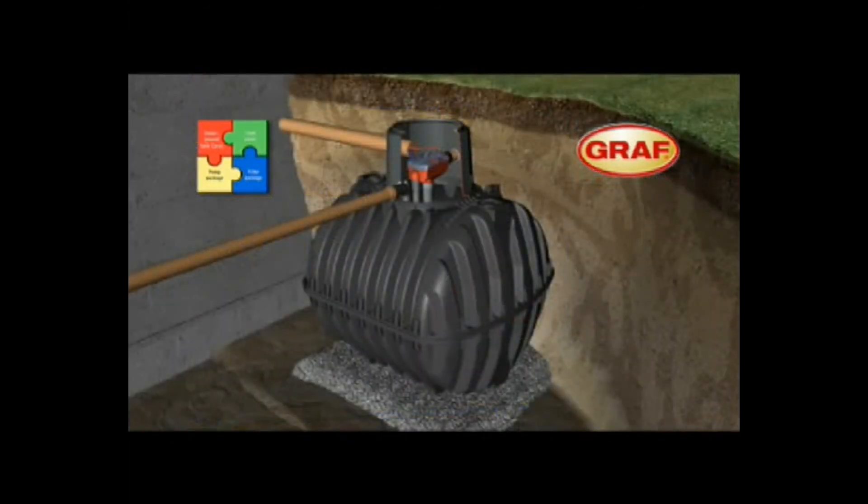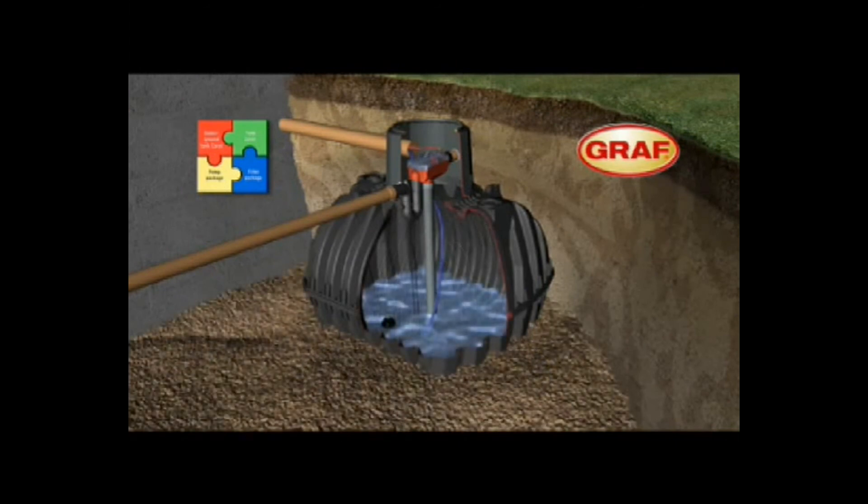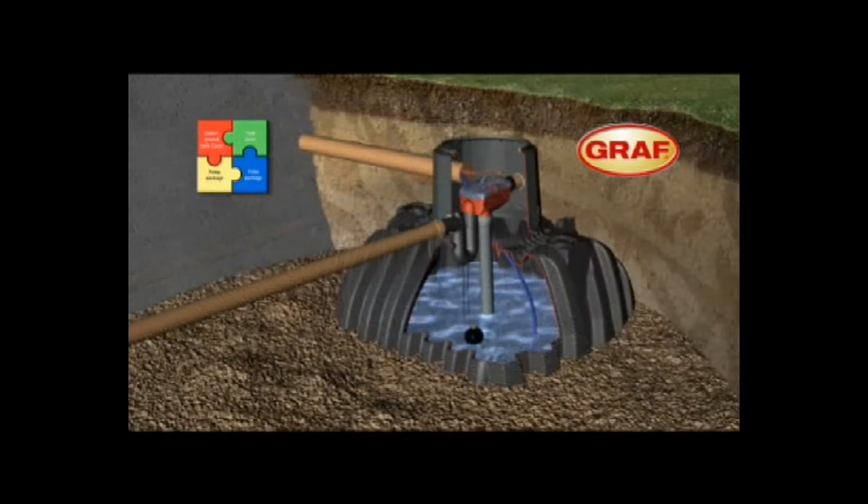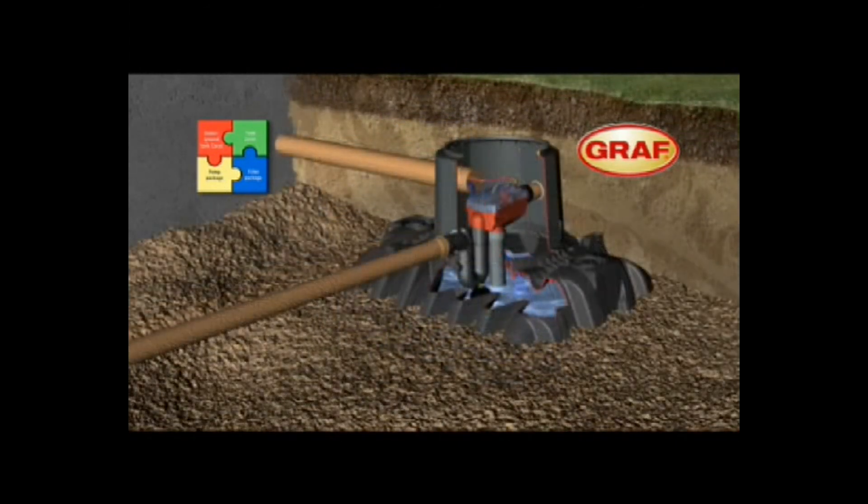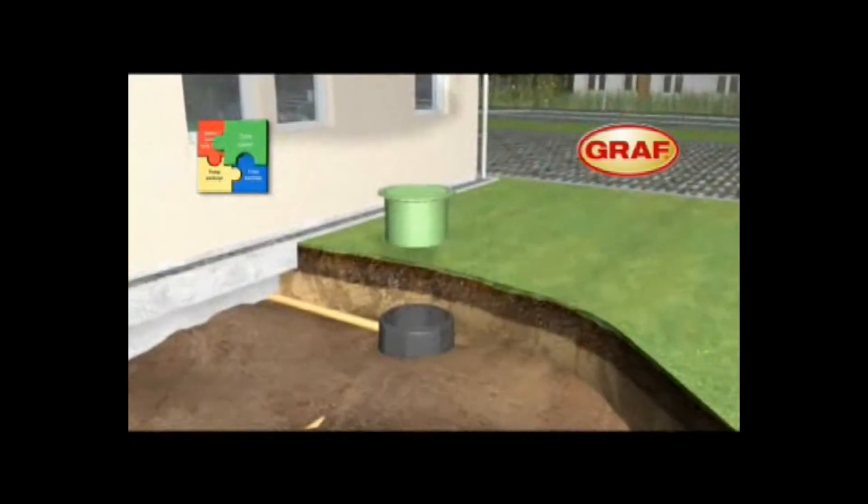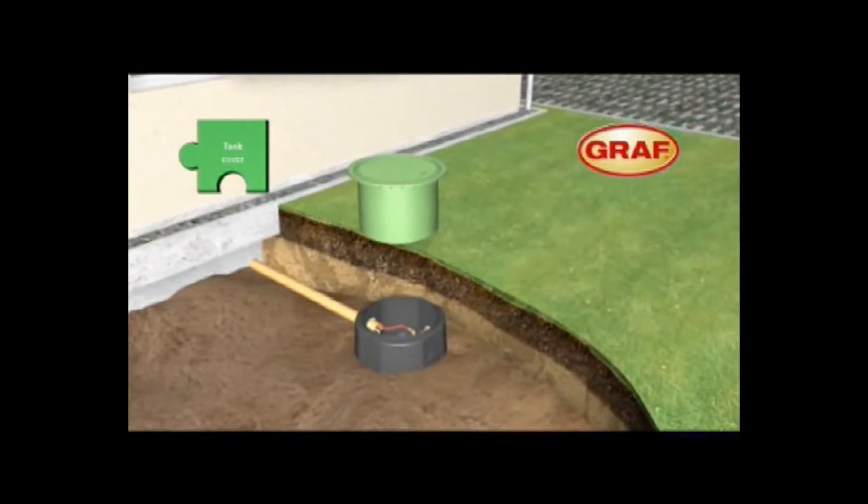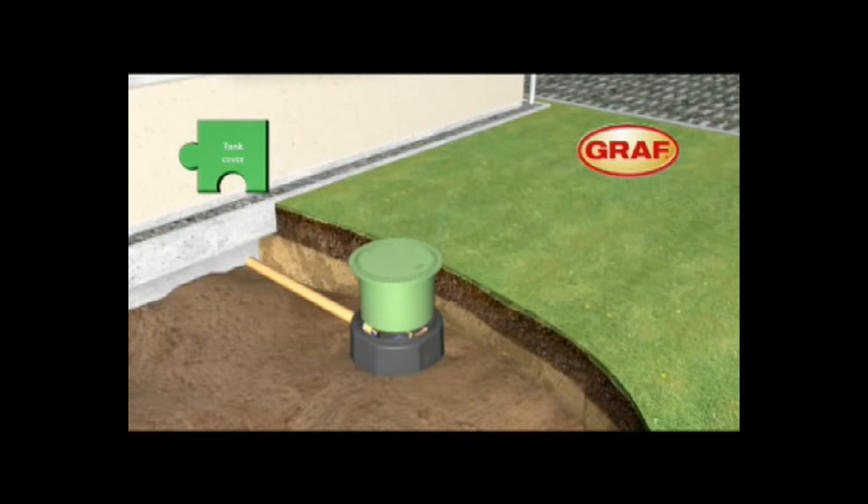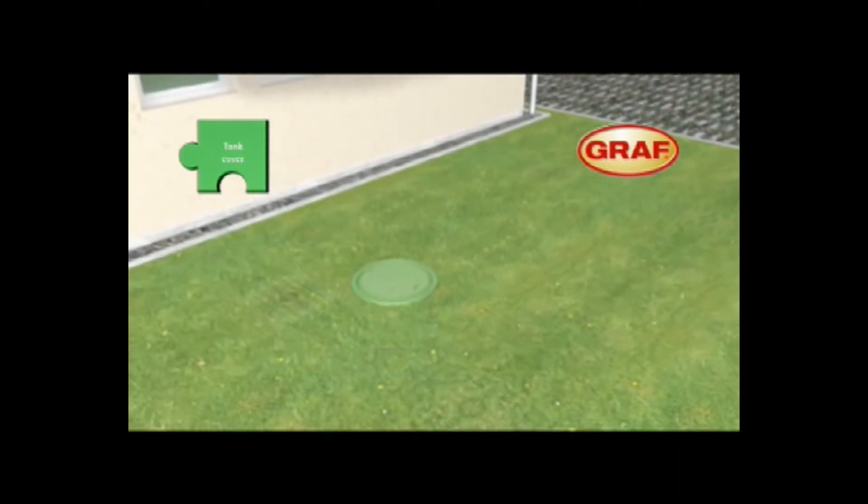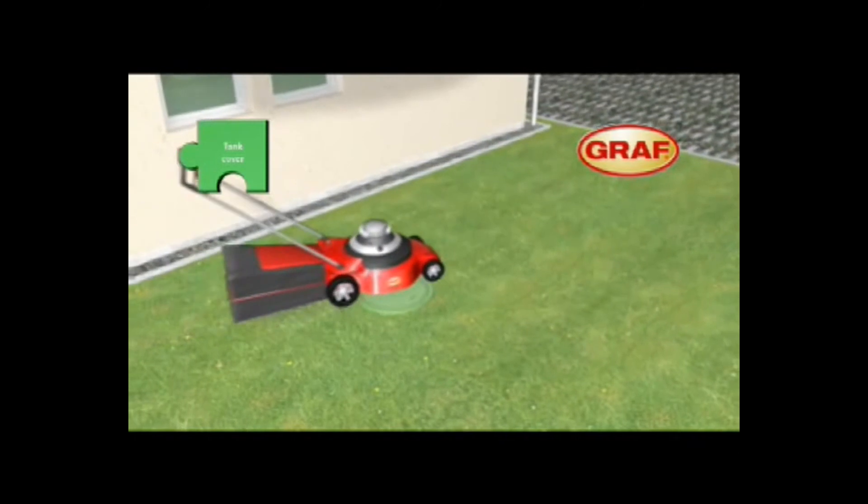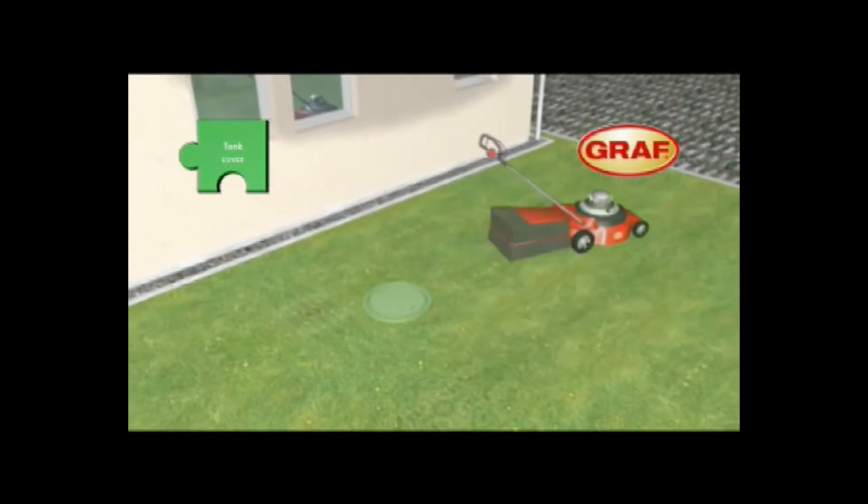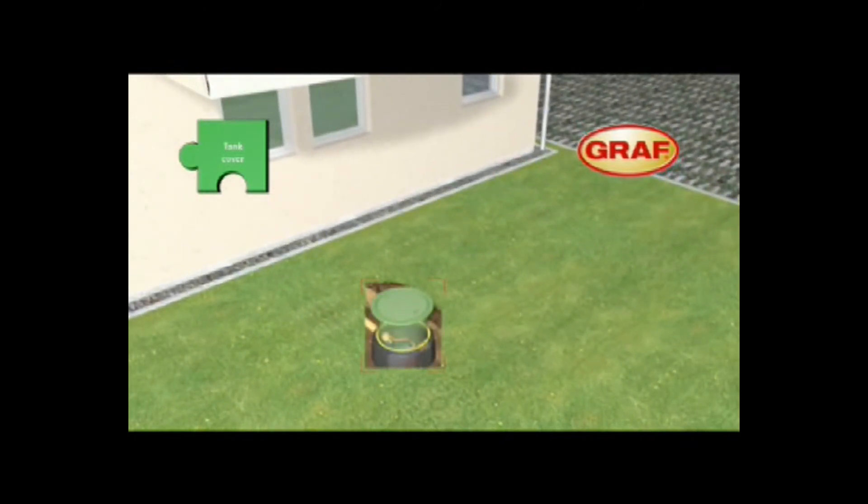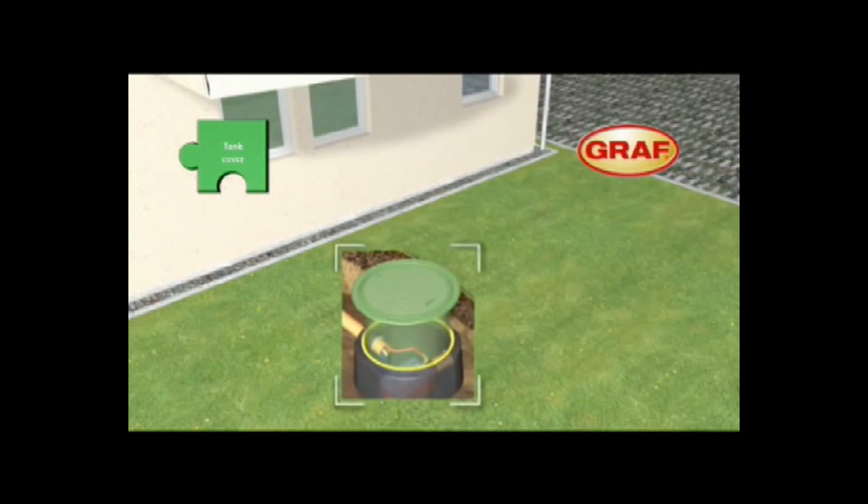The excavation is backfilled in 30cm layers, while the water level inside the tank is raised simultaneously. The telescopic dome shaft is installed just before the backfilling is completed. The system is freely adjustable and therefore ensures effortless and perfect alignment with the ground level. An additional rubber gasket seals the tank up to the surface area.